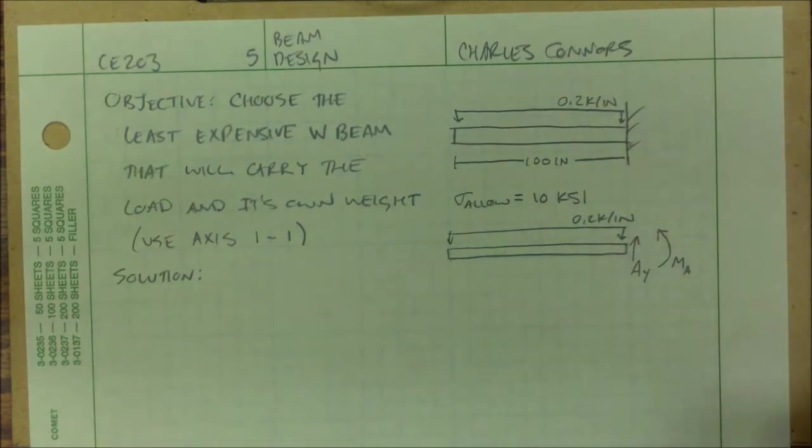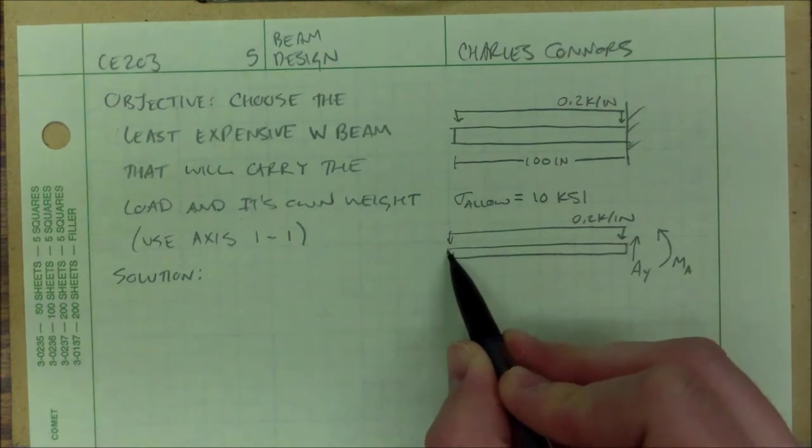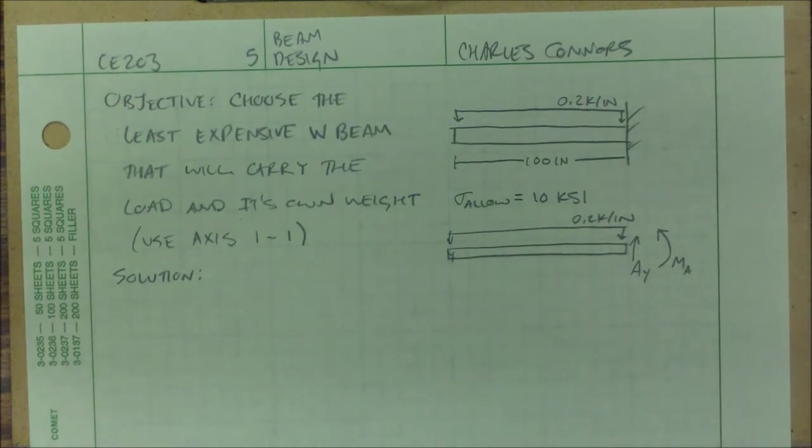So we have some kind of beam here. I choose the axis 1-1. I suppose that makes it look kind of like that in the long run, but we don't have to worry about that. Your table says which one is axis 1-1.